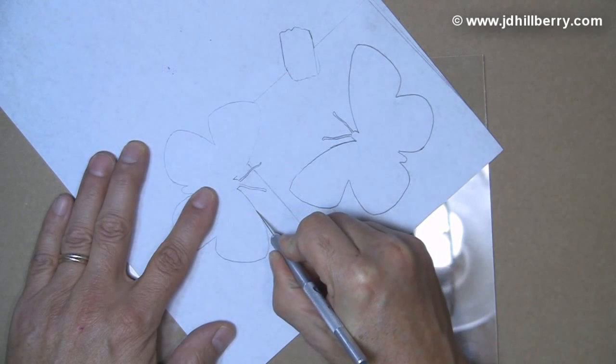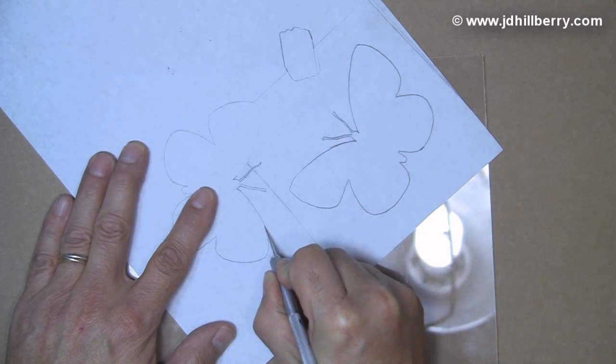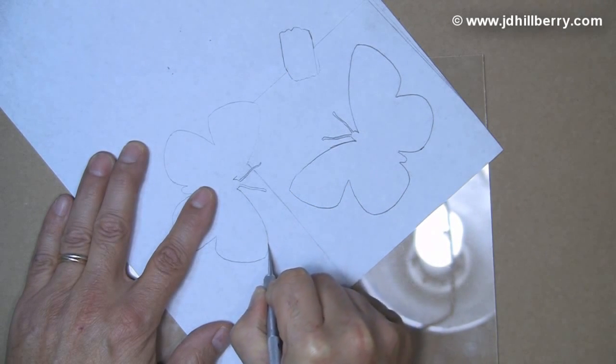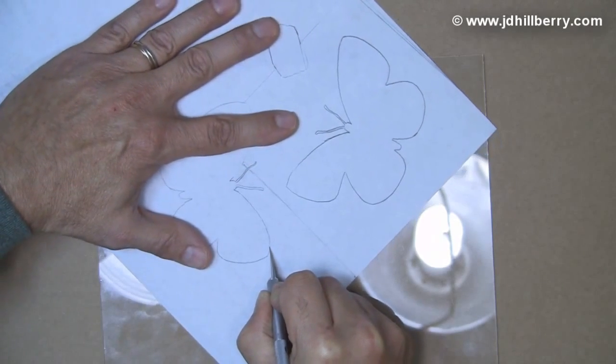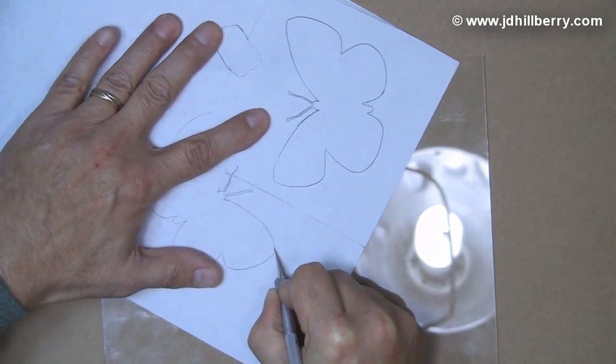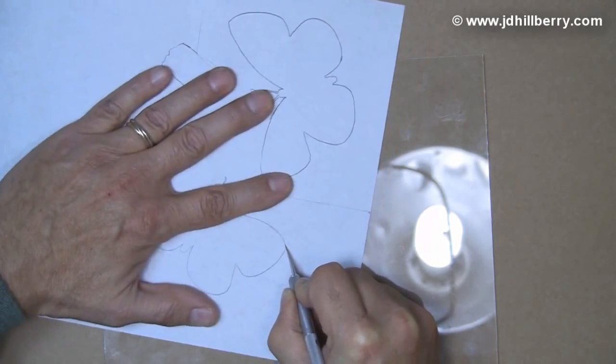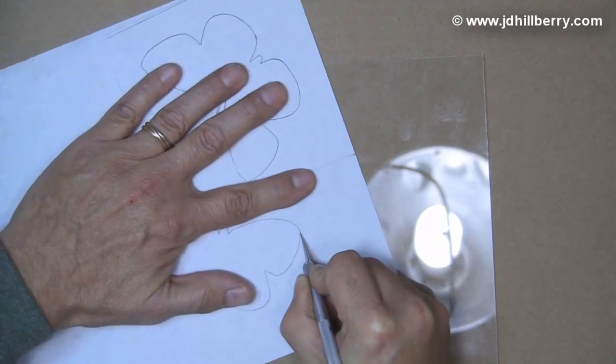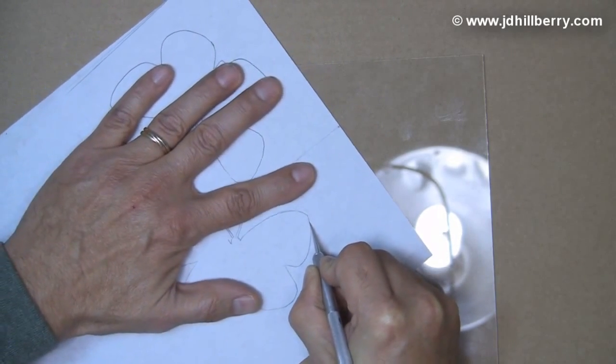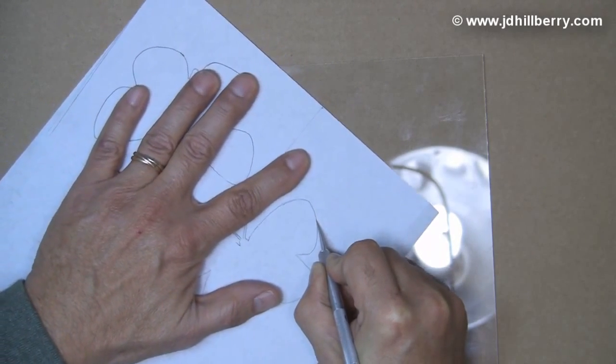It does take a little practice to figure out how hard to push the X-Acto knife to get a nice clean edge. I find it easiest when cutting this frisket to pull the knife towards you and pivot the frisket. It makes for nice, cleaner cuts, especially around corners.